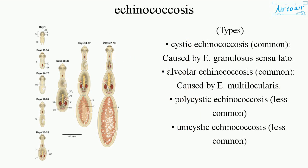Types. Cystic echinococcosis, common, caused by E. granulosus sensu lato. Alveolar echinococcosis, common, caused by E. multilocularis. Polycystic echinococcosis, less common. Unicystic echinococcosis, less common.